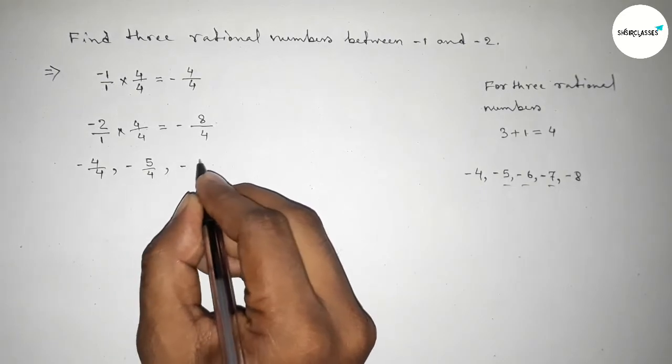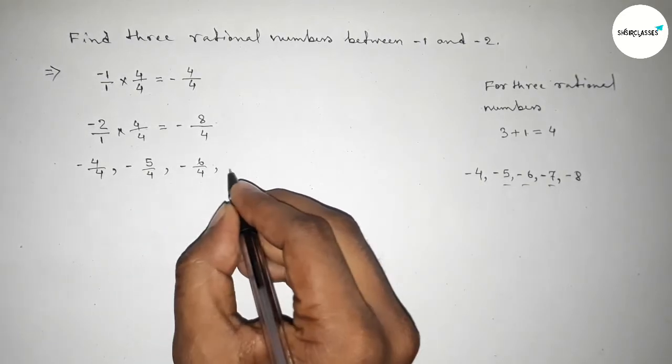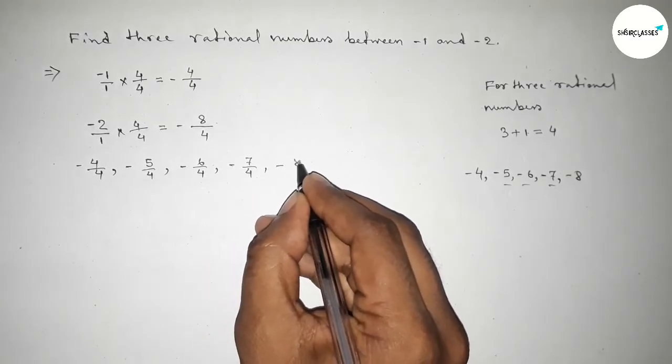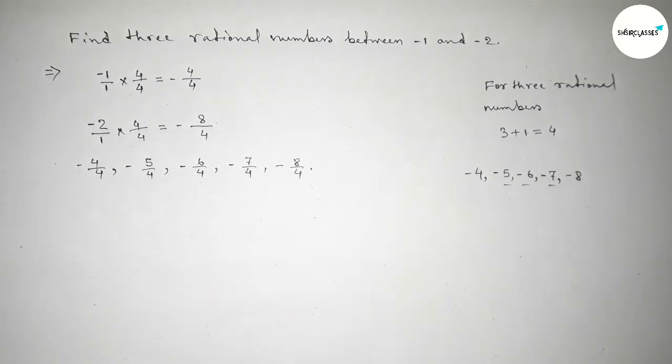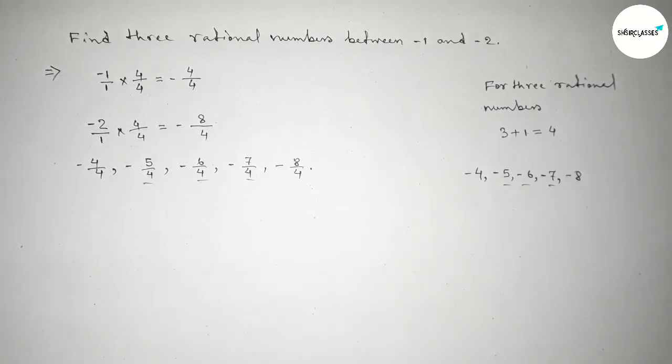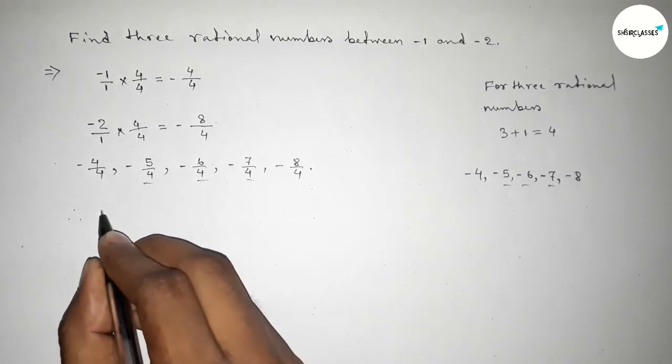First, minus 4 over 4, minus 5 over 4, minus 6 over 4, minus 7 over 4, and last minus 8 over 4. Among these, the three required rational numbers between minus 1 and minus 2 are the middle three.